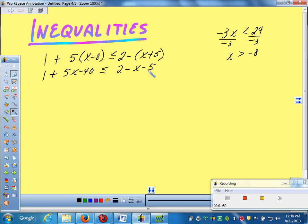Then what? Combine common terms. Let's combine common terms. So 1 and negative 40 would be negative 39. So I could have 5x minus 39. And over here, negative 3 and negative x.